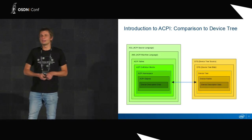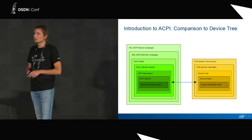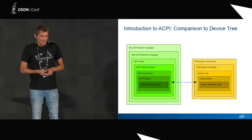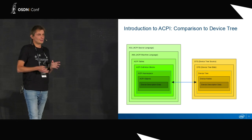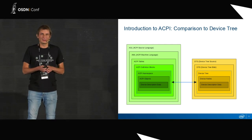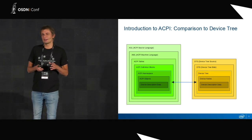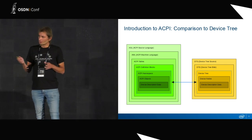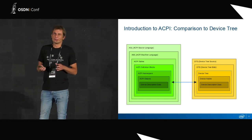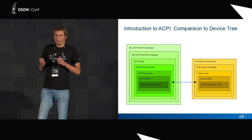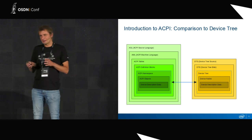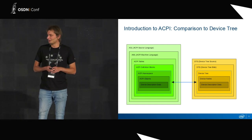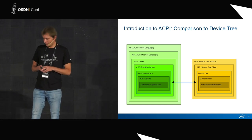Here we could see the similarities between device tree and ACPI. Besides the fact that ACPI provides a language, it also provides static tables — and that's what is comparable with device tree. Device tree provides only static information, so that needs to be kept in mind.